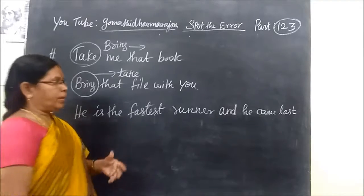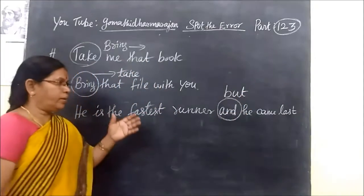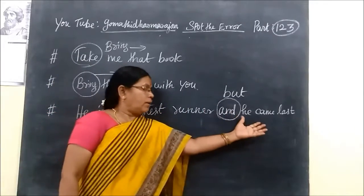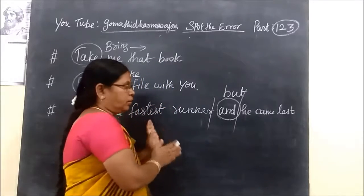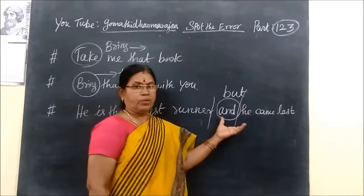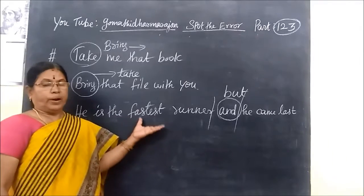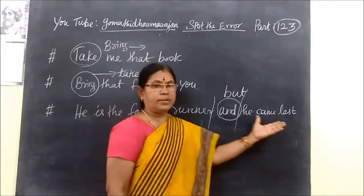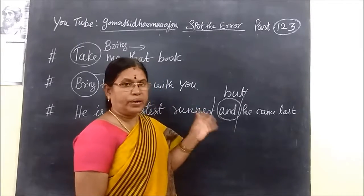Next example: 'He is the fastest runner and came last.' Here 'and' is incorrect. 'And' is usually used to add similar or expected information. But because coming last is unexpected for the fastest runner, you should use 'but': 'He is the fastest runner but came last.' 'But' is used when the result is unexpected or contrasting.